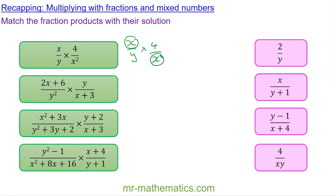You can see that x will go into both, so x divided by x will make 1, and that is over y multiplied by 4. And x squared divided by x is x, which makes 4 over xy. With this one, do you want to try matching these three by pausing the video? You can unpause it when you're ready to continue.